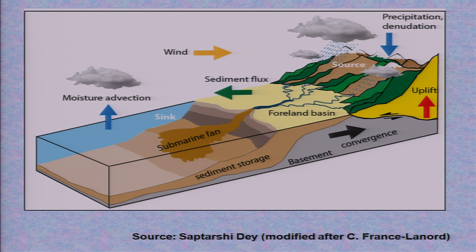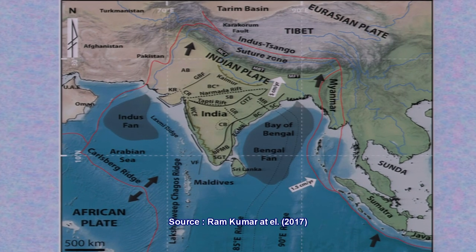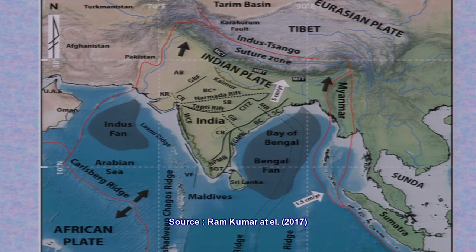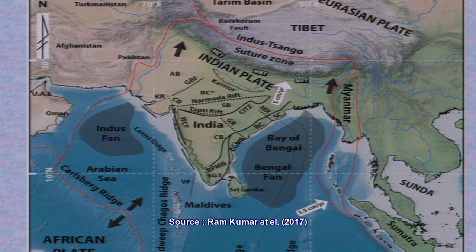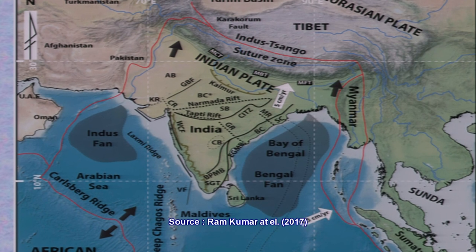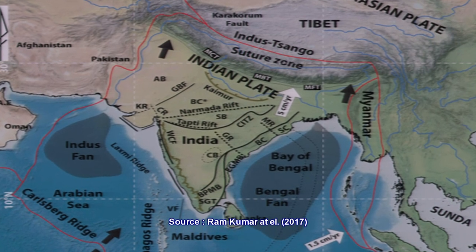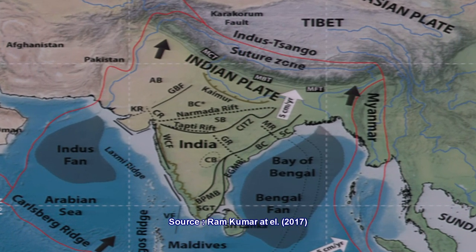The entire process of basin formation and plate movement is shown in this slide. This shows the entire panorama of the Indian subcontinent with reference to other landmasses. One side you have China, other side Tibet, and on another side Pakistan and Afghanistan. The area marked in red colour is the Indian plate. I have taken you through the evolution of the Himalaya and I hope you found this study very interesting. Thank you.